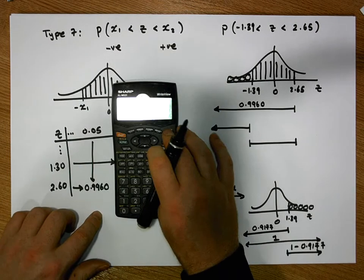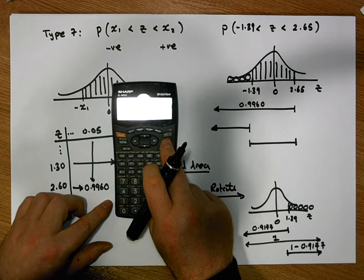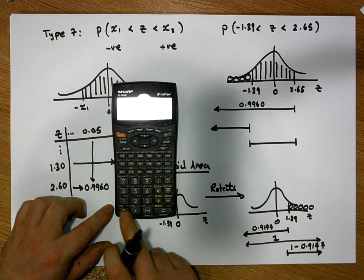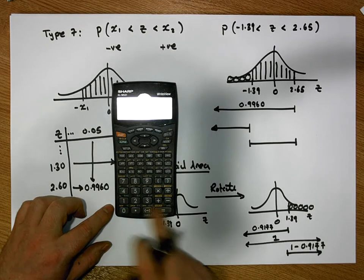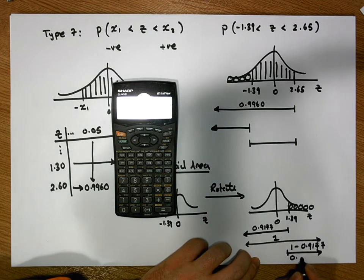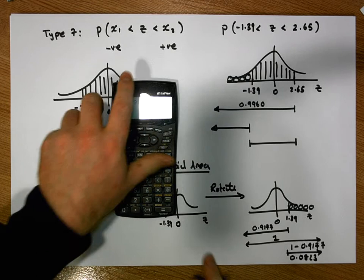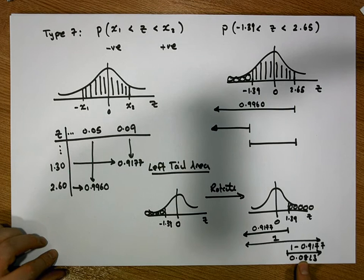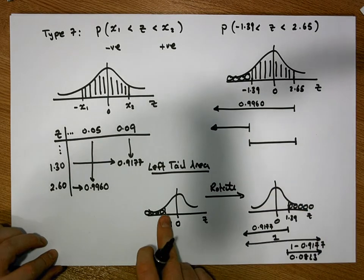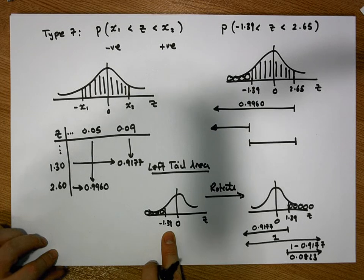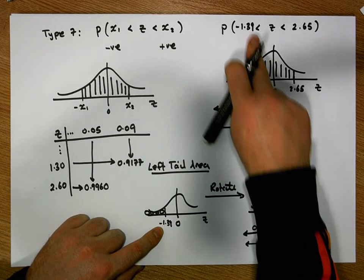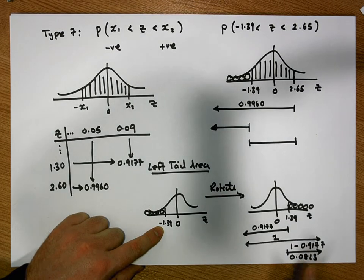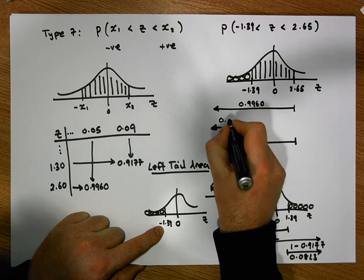Let's calculate the right-hand tail area on our calculator: 1 minus 0.9177 gives us a value of 0.0823. In other words, the area in the right-hand tail above 1.39 is 0.0823. Through rotation, that's the same as the area to the left-hand side of minus 1.39 — exactly the left tail area we require. So this area to the left-hand side is 0.0823.